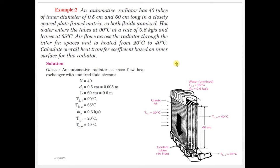Coming to the next problem. An automobile radiator has 40 tubes of inner diameter 0.5 cm and 60 cm long in a closely spaced plate-finned matrix — both fluids are unmixed. Hot water enters the tube at 90°C at a rate of 0.6 kg/s and leaves at 65°C. Air flows across the radiator through the inter-fin spaces and is heated from 20°C to 40°C. Calculate the overall heat transfer coefficient based on inner surface area. This is a cross flow heat exchanger.